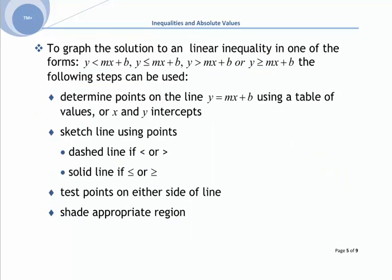To graph a solution to a linear inequality in the form y < mx + b, y ≤ mx + b, y > mx + b, or y ≥ mx + b, use the following steps: first, determine points on the line y = mx + b using a table of values or intercepts. Then sketch the line — dashed for strict inequalities, solid for 'or equal to'. Finally, test points on either side of the line and shade the appropriate region.